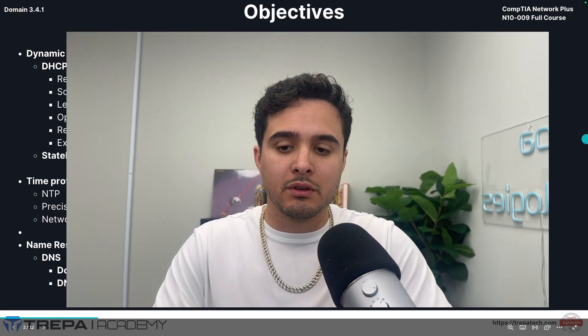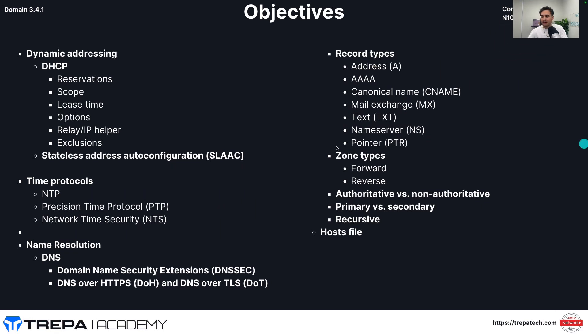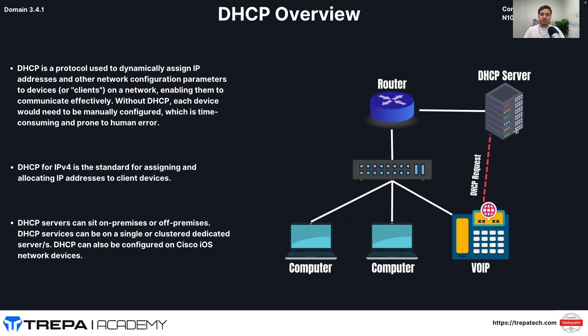What's going on everybody, Johnny Bannon here at Trepit Technologies. If you're enjoying the content please like, subscribe, and share with your friends. Let's go over domain 3.4 of our Network Plus full video course: Network Services. In today's video lesson we're going to touch on DHCP, then time protocols — NTP, PTP, and the secure version NTS — and also the IPv6 automatic addressing method called SLAAC. In this video we'll go over the objectives on the left; in the next video we'll touch on DNS and name resolution, which I want to be its own dedicated video.